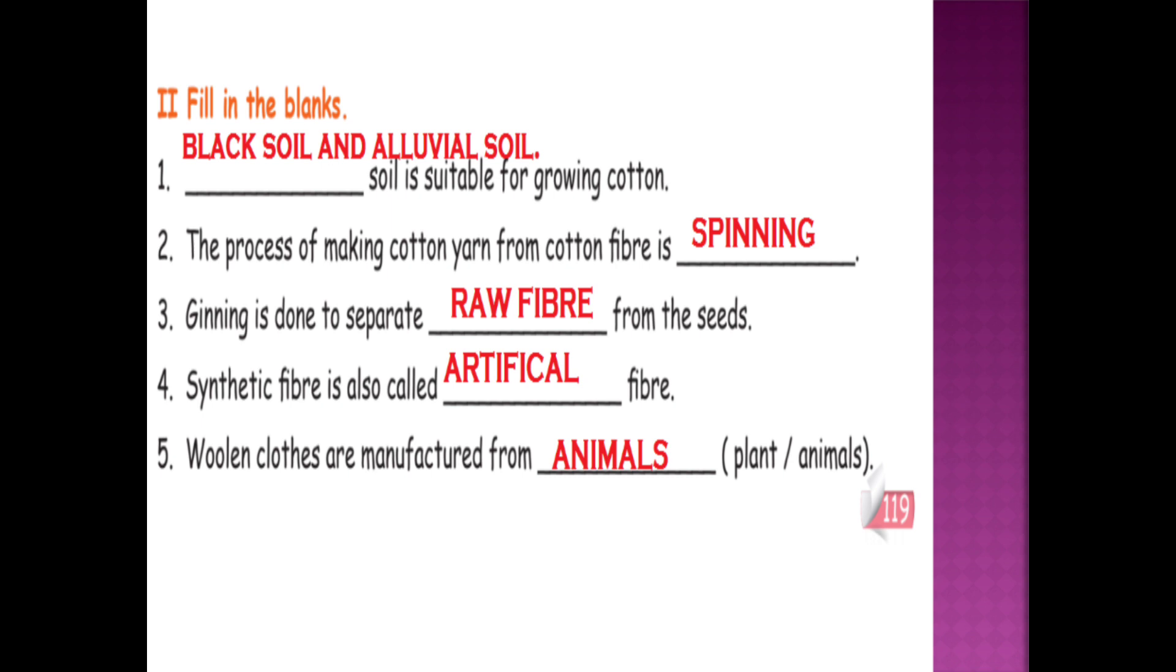Next, fill in the blanks. First question: blank soil is suitable for growing cotton. Black soil and alluvial soil. The process of making cotton yarn from cotton fiber is blank. Spinning. Ginning is done to separate blank from the seeds. Raw fiber. Synthetic fiber is also called blank fiber. Artificial fiber. Woolen clothes are manufactured from plants or animals. Animals.